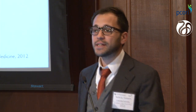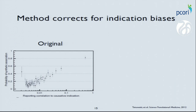This line represents the bias — after we apply this method and correct for it, there is no longer a significant relationship between how tightly correlated a drug is to its indication and the reporting of these false adverse events. So the method successfully corrects for that bias.